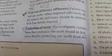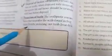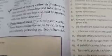Factory waste that is acidic when dissolved into rivers affects aquatic life. Hence should be neutralized with base before disposal. Protection of teeth: The toothpaste contains bases that neutralize the acids found in food juices, thereby protecting our teeth from decay.